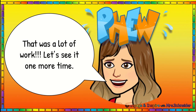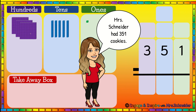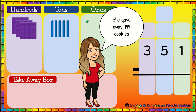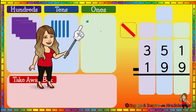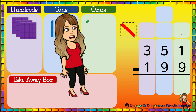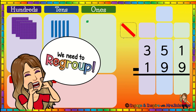That was a lot of work — let's see it one more time. Mrs. Schneider had three hundred fifty-one cookies. She gave away one hundred ninety-nine cookies, so we're going to subtract one hundred ninety-nine. How many cookies did Mrs. Schneider have left? We're going to start on the right in the ones place. We have one cookie and we need to take nine away — we only have one, we can't give nine away. What do we do? We need to regroup.